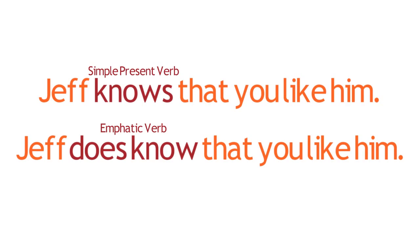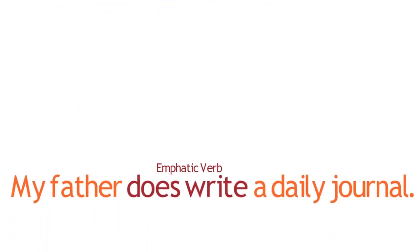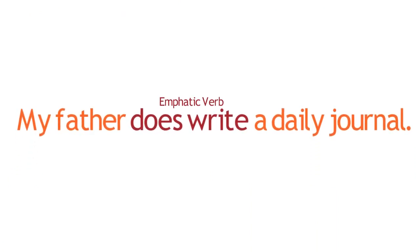As with all compound verb forms, the emphatic form has a main verb, which tells the action of the sentence, plus an auxiliary verb that helps the main verb to function. For example, in this sentence, the main verb 'write' denotes the type of action that the subject, my father, takes. The auxiliary verb 'does' helps this verb to function as an emphatic verb, contradicting any potential belief to the contrary.